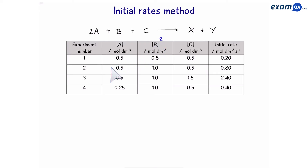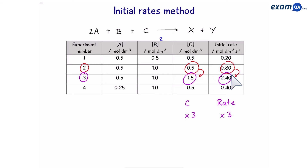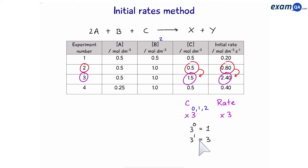Let's keep going through the table. We can compare reaction 2 with reaction 3. Here, C has tripled but A and B have remained constant. The rate has also tripled. So is C zero order, first order, or second order? If it was zero order, three to the power of zero gives us one — the rate hasn't times by one. If it was first order, three to the power of one would give us three. And if it was second order, three to the power of two would give us nine. The rate has multiplied by three, which means that C must be first order.